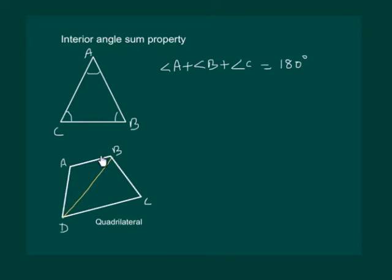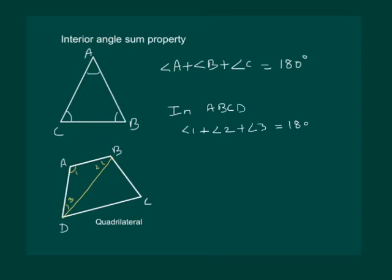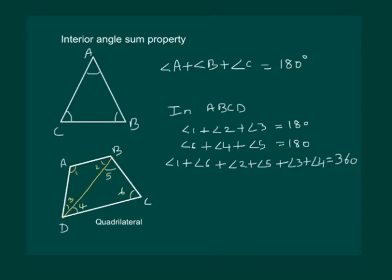Now we have triangles ABD and BCD. Clearly, angle 1 plus angle 2 plus angle 3 is equal to 180 degrees in triangle ABD, and angle 6 plus angle 4 plus angle 5 is also 180 degrees in triangle BCD. Adding these two equations, we get angle 1 plus angle 6 plus angle 2 plus angle 5 plus angle 3 plus angle 4 is equal to 360 degrees.